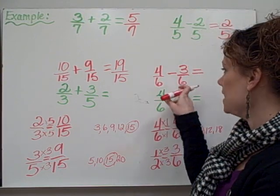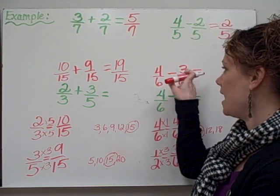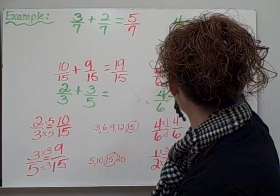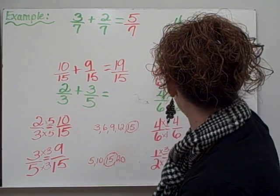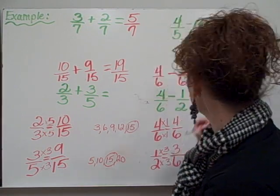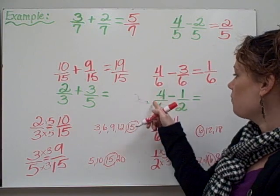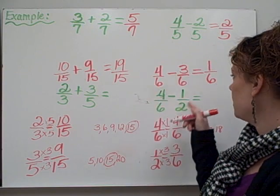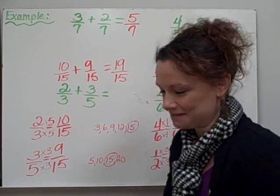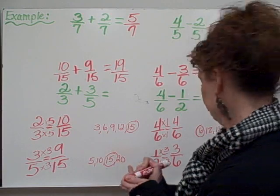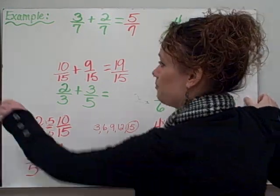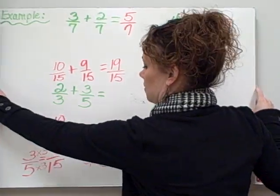Now my denominators are the same, and I can just focus on my numerators. 4 minus 3 equals 1, so keep my denominator the same. Therefore, 4 sixths take away 1 half equals 1 sixth. Alrighty — it is time for you to try some practice problems on your own.